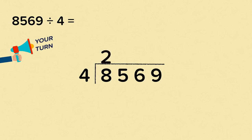Onto the hundreds now. Five divided by four goes one, remainder one. That remainder moves into the tens place. Now we've got sixteen tens. Sixteen divided by four, that's four.